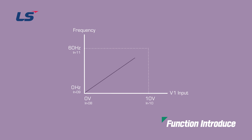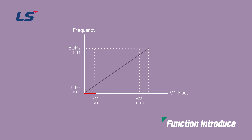For example, if the default is to stop at 0 Hz when 0 volts is input and operate at maximum frequency when 10 volts is input, you may want it to stop even when 2 volts is input, or operate at maximum frequency even if only 8 volts is input. In this case, you must set the frequency range for analog input.